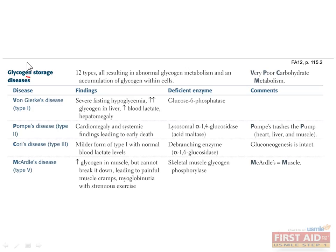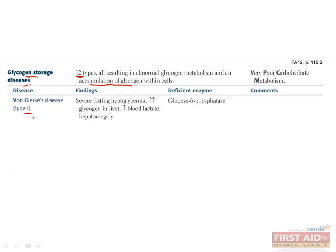It's important to know the pathways of glycogen synthesis and degradation to appreciate disorders of glycogen metabolism. The glycogen storage diseases are caused by abnormal glycogen metabolism, which can cause damage by allowing glycogen to accumulate to toxic levels inside cells. There are 12 types, but we'll review the four most common ones. Type 1 glycogen storage disease, or von Gierke's disease, is caused by a deficiency of glucose-6-phosphatase.